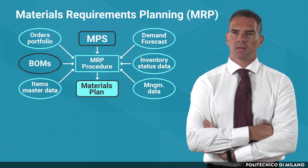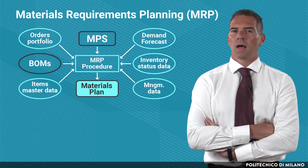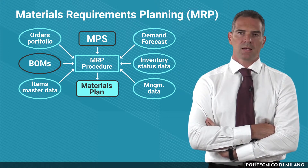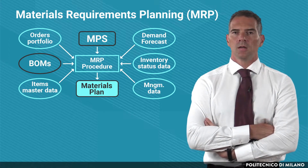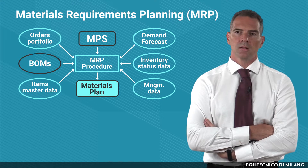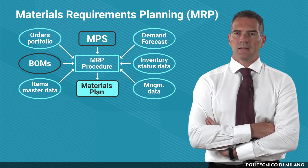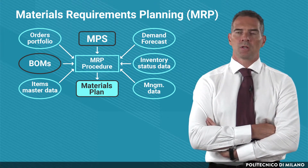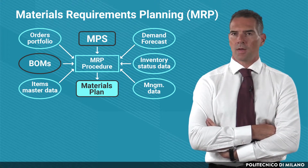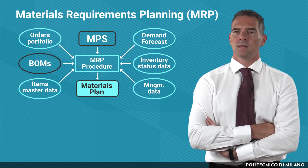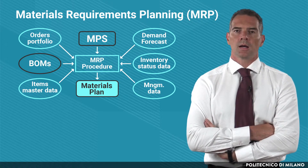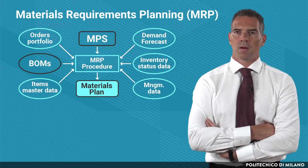From the IT perspective, the MRP procedure requires a lot of information from both the technical and management domains. The most important data are the bill of material, the inventory status, the lead time, and other information such as the demand, the order portfolio, and future forecasts. This is the data typically used in the traditional MRP procedure.